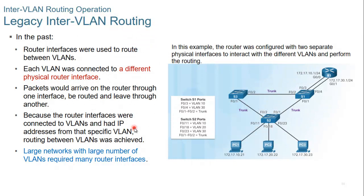In the past, router interfaces were used to route between VLANs. Each VLAN was connected to a different physical router interface. So here we have VLAN 10 and VLAN 30, with two interfaces — one for VLAN 10 and one for VLAN 30. Packets would arrive on the router through one interface, be routed, and leave through another. For example, if a packet comes from VLAN 10, it will go through one interface, be routed, and come out through the other. Because the router interfaces were connected to VLANs and had IP addresses for that specific VLAN, routing between VLANs was achieved.